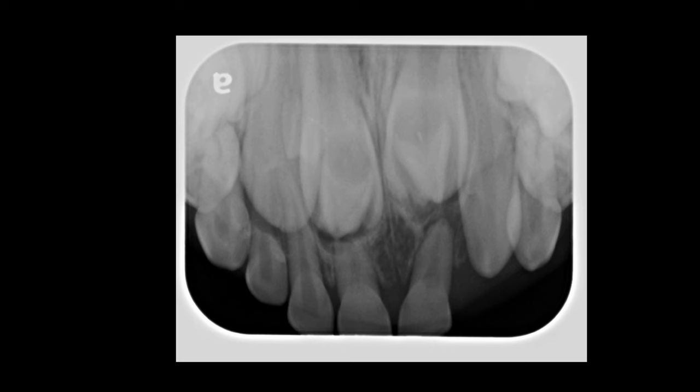Let's take a look at this occlusal radiograph. I want you to spend a few seconds to determine what are primary teeth, what are permanent, how does the eruption status of the right side differ from the left side, how many extra teeth — supernumeraries — do you see? Those are some questions you want to be asking yourself before I run through this radiograph with you, because there's a lot of information captured here and if you're not used to seeing occlusal radiographs this can certainly be very confusing at first.